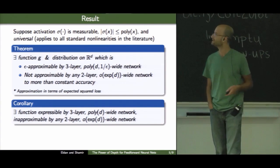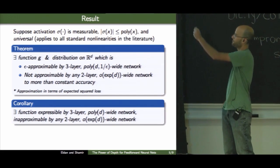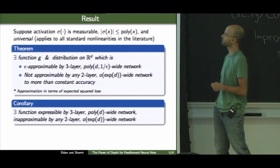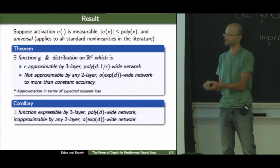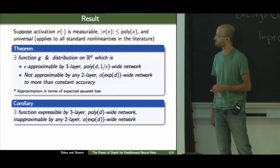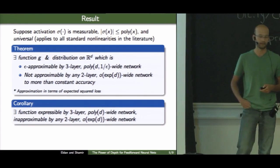A corollary of this, of course, is that by picking something which approximates g well enough using a three-layer network, we get a function which is exactly expressible by a three-layer network, but you cannot approximate it by any two-layer network.